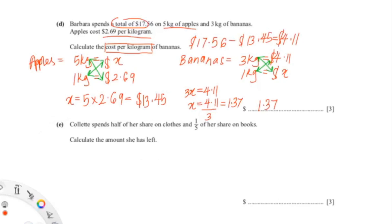1 kg of banana is $1.37. So the next question is: Colette spends half of her share on clothes. We know that Colette's share is $136 from the previous question, and half of her share is spent on clothes and a fifth of her share is spent on books.